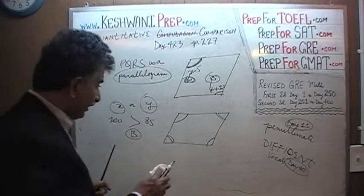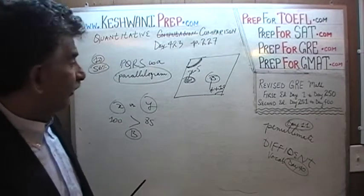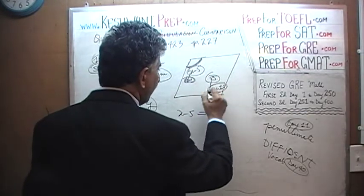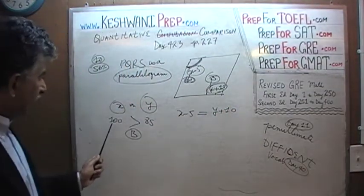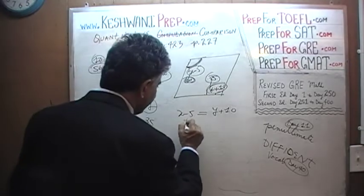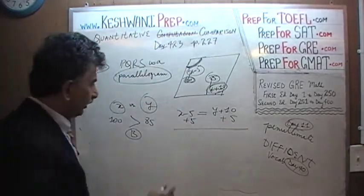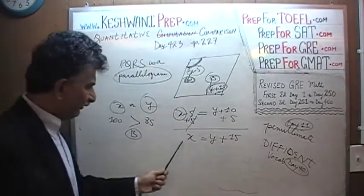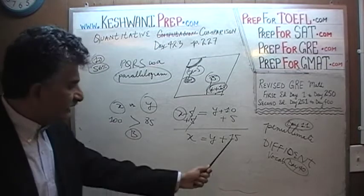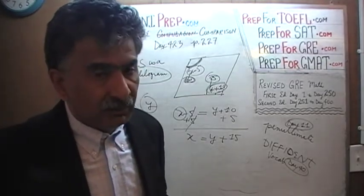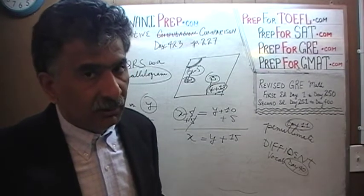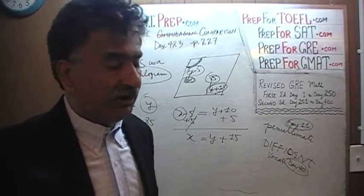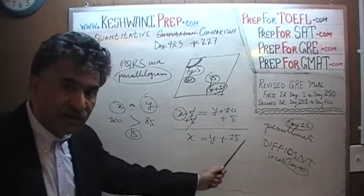Another way we could have done the same problem is through algebra, which is not actually that bad at all. Very simple algebra, very straightforward. We have to realize that this angle, X minus 5, has to equal this angle, Y plus 10. Let's add 5 to both sides so that we can have X by itself. X equals Y plus 15. Now what does this tell us? This is a sentence. Just like in a language we have sentences, in mathematics, in algebra, we have equations. Algebra is a language. The sentence in the language of algebra is called an equation.